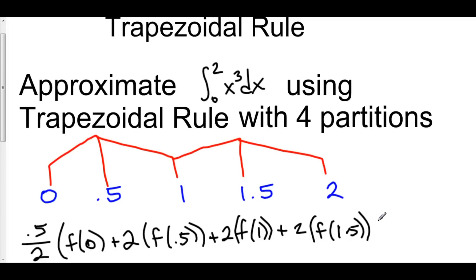Plus, finally, our end point on the right, 2, which is only applied to one trapezoid. So it's just one of those, f of 2.